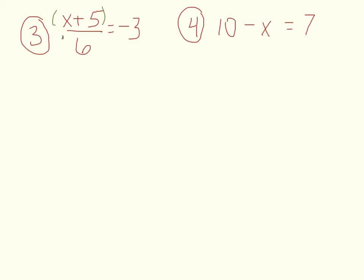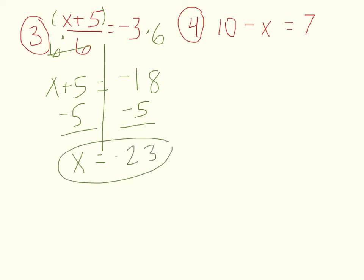So we need to multiply by 6, because that's the opposite of dividing. So you get x plus 5 equals, and then negative 3 times 6 is negative 18. And then to get rid of plus 5, you subtract 5 from both sides. So you get x equals, now negative 18 minus 5 is negative 23. And that's your answer.